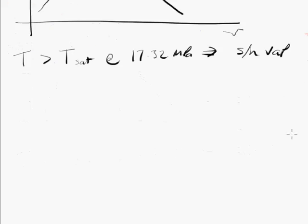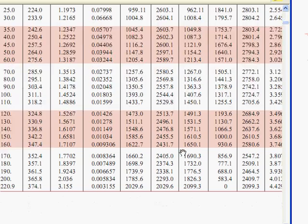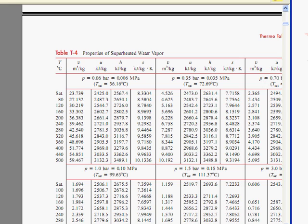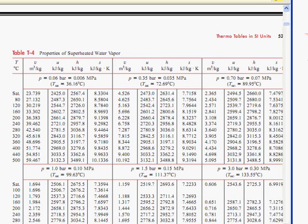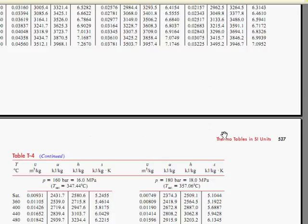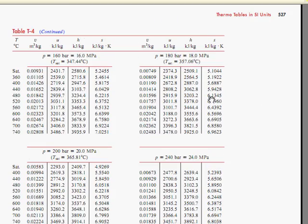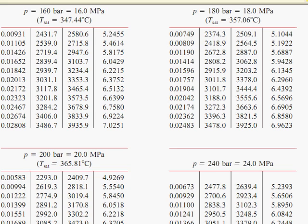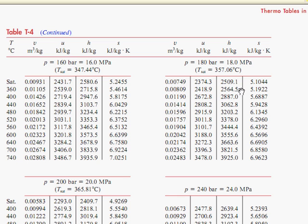Now, so now that we know that, we can go to the superheated vapor tables. We have a known pressure and a known temperature, which makes things relatively straightforward. We're looking for 17.32 MPa, which of course, there isn't going to be a table that corresponds exactly to that value. So, we're going to be interpolating between these two tables, 16 and 18 MPa. And as luck would have it, there is an entry for exactly 440 degrees Celsius. So, we're interpolating between 3103.7 kJ per kilogram at 16 MPa and 3062.8 at the higher pressure.